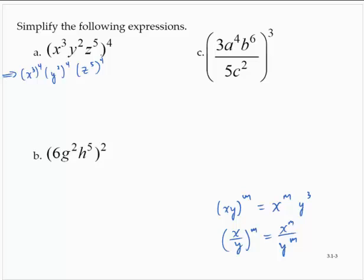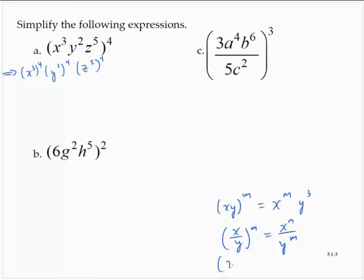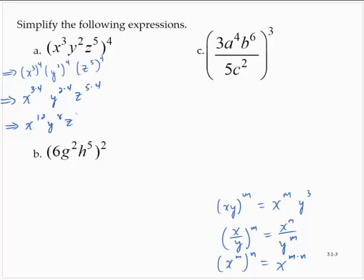Another rule for exponents tells us that if we have x to the nth power and we raise it to a power, we leave the base alone and we multiply the exponents. So that gives me x to the 3 times 4, y to the 2 times 4, z to the 5 times 4. Simplifying further, I would have x to the 12th, y to the 8th, z to the 20th.